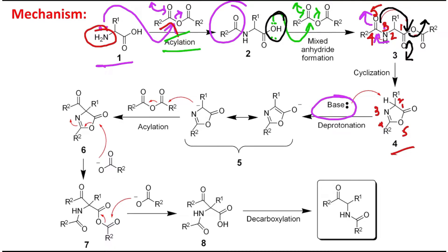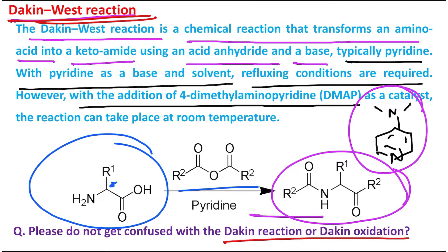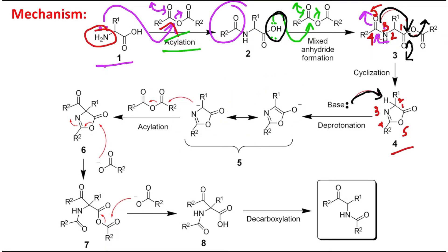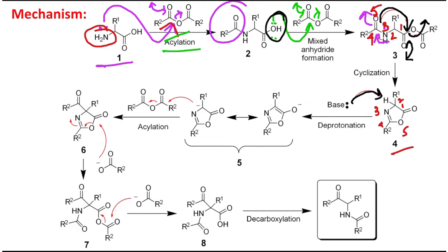In the next step, the base plays a role again — it abstracts a proton. A relatively stronger base makes the reaction smoother; for example, DMAP versus simple pyridine. In DMAP, the lone pair of the dimethylamino nitrogen donates into the pyridine ring, increasing the electron density on the pyridine nitrogen acting as base, compared to simple pyridine. After this proton abstraction, a carbanion derivative is produced that is resonance-stabilized — the charge can delocalize, producing the corresponding resonance form.